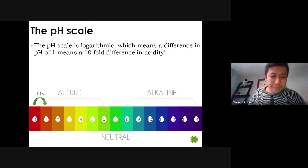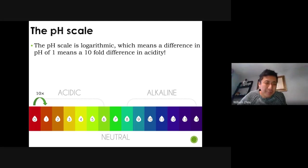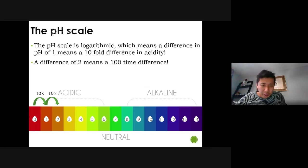The pH scale is logarithmic. What does that mean? It means a difference of pH of 1 is a tenfold difference in acidity. So going from a pH of 0 to a pH of 1, that pH of 0 is 10 times more acidic than that pH of 1. And that pH of 1 is 10 times more acidic than 2. A difference of 2 means a hundred times difference. If you just do the math, 10 times 10, that's a hundred times. Yeah, it does matter if you just move up or down the scale by simply one.